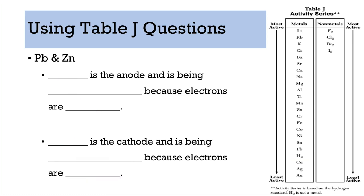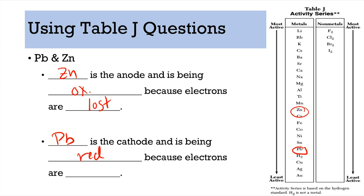Next pair: Pb (lead) and zinc. Zinc is higher up, so zinc is the anode — it is being oxidized and electrons are lost. Pb (lead) is the lower one, so it is the cathode — it is being reduced and electrons are gained.